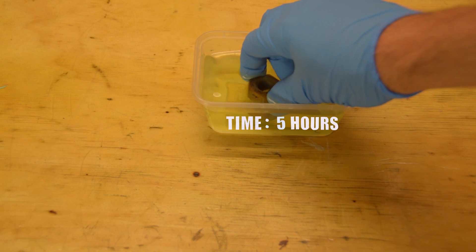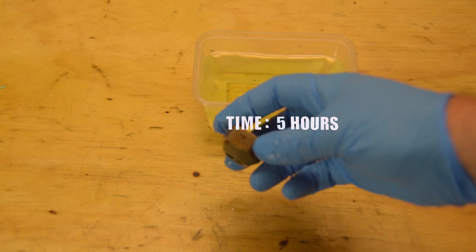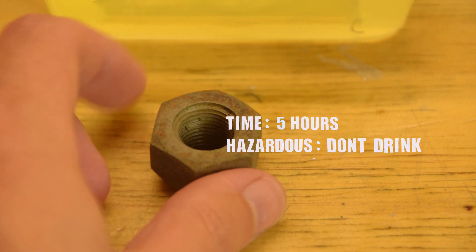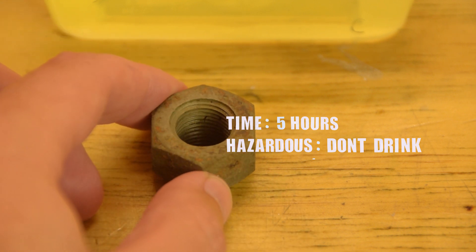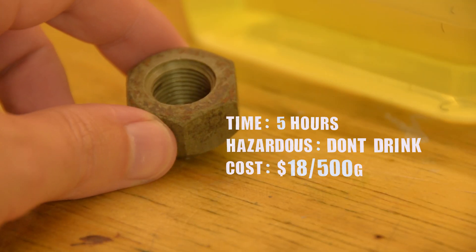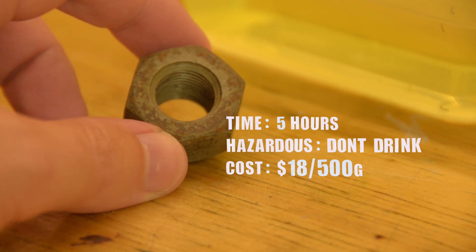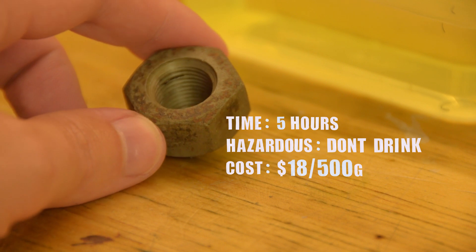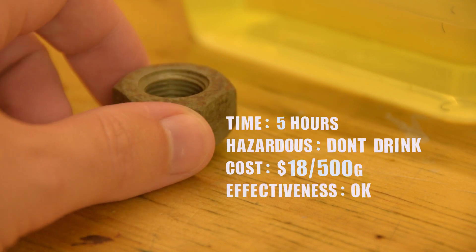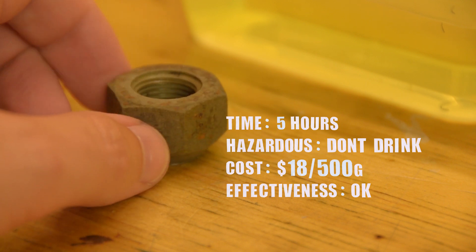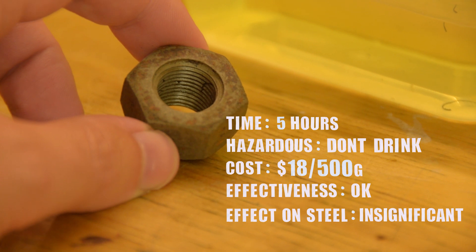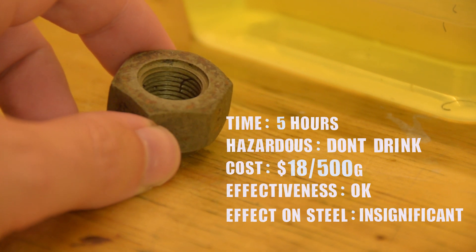I left the nut in the acid for about five hours. Oxalic acid is fairly strong. Try to refrain from splashing it all over yourself. This 500 gram bag costs about $18. The packet is marketed as a stain remover for timber. And in that use the packet says the mix will make five litres. As you can see it's removed most of the rust. Definitely more than citric acid. Oxalic acid is not going to cause any noticeable corrosion on your good steel within a reasonable time frame.